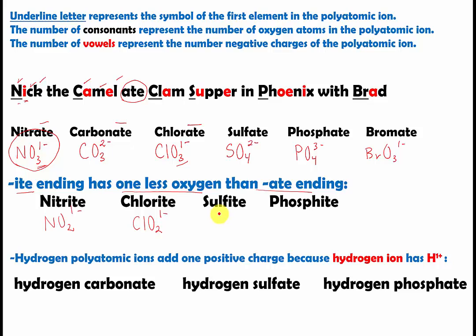Here we have sulfite, coming from sulfate. Instead of four oxygen atoms, now we have three: SO3 two minus. For phosphite, it's going to be three oxygen atoms because phosphate has four: PO3 three minus.